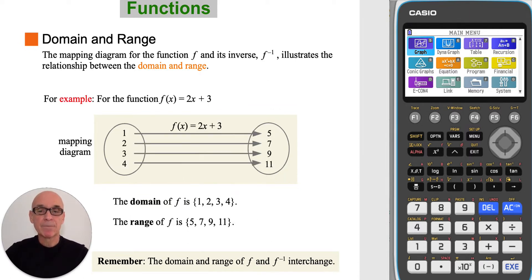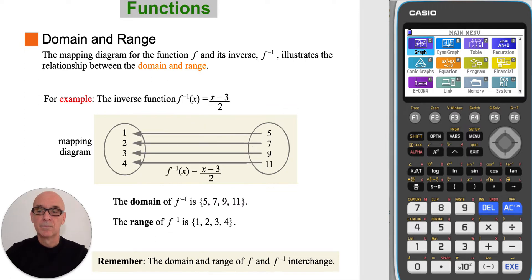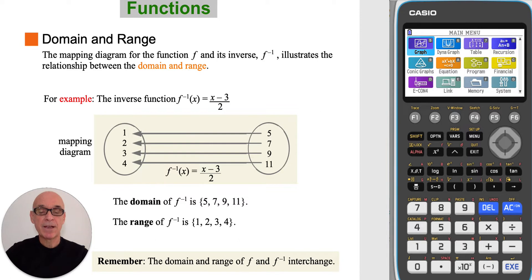In the mapping diagram shown, the domain of the function f — the numbers 1, 2, 3, 4 — are shown on the left, and the range of f — the numbers 5, 7, 9, 11 — are shown on the right. For the inverse function, the domain of inverse f — the numbers 5, 7, 9, 11 — are shown on the right, and the range of inverse f — the numbers 1, 2, 3, and 4 — are shown on the left. Simply remember that the domain and range are interchanged.